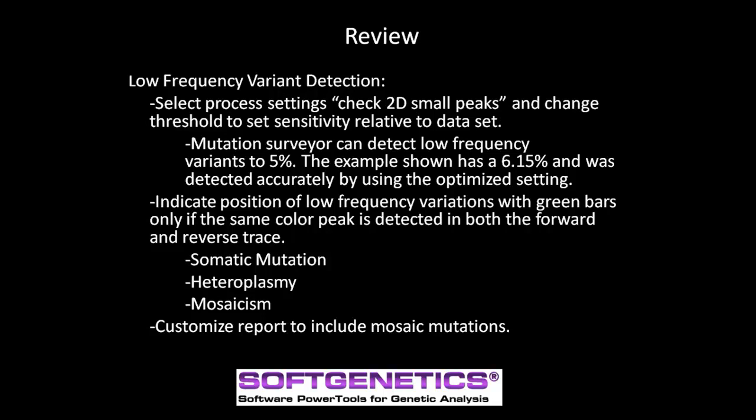To quickly review: we talked about how to change settings to detect and display low frequency variants that could indicate somatic mutation, mosaic mutation, heteroplasmy, or other low frequency variants. The threshold can be changed to lower or raise sensitivity. The green bar in the mutation electropherogram is only displayed if the same color peaks are detected in both the forward and reverse direction at the same position. The example shown is a somatic mutation with 6.5% mutant allele contribution. We also discussed how to include these variants in a custom report that can be printed or exported in different formats.